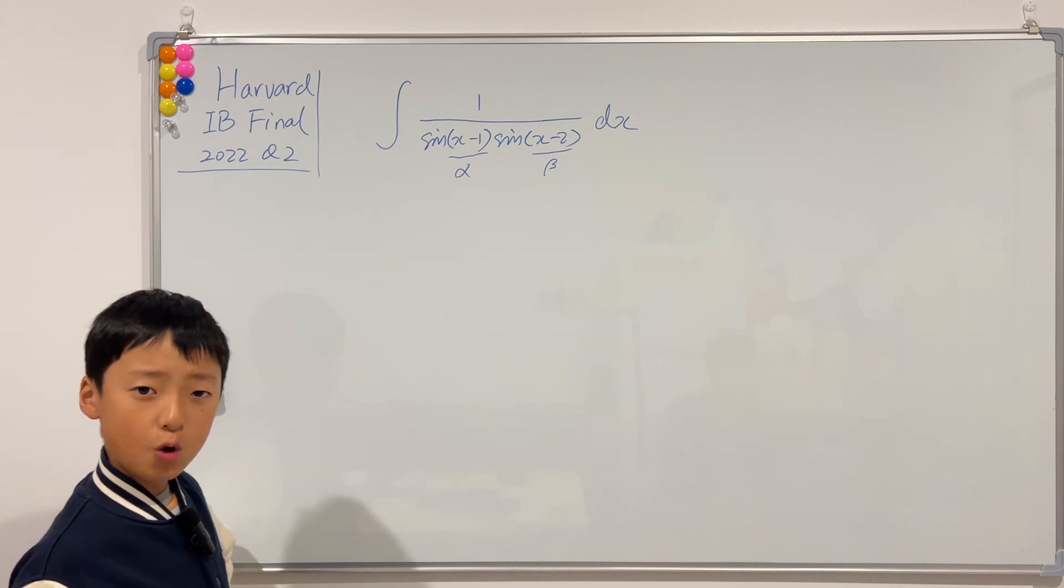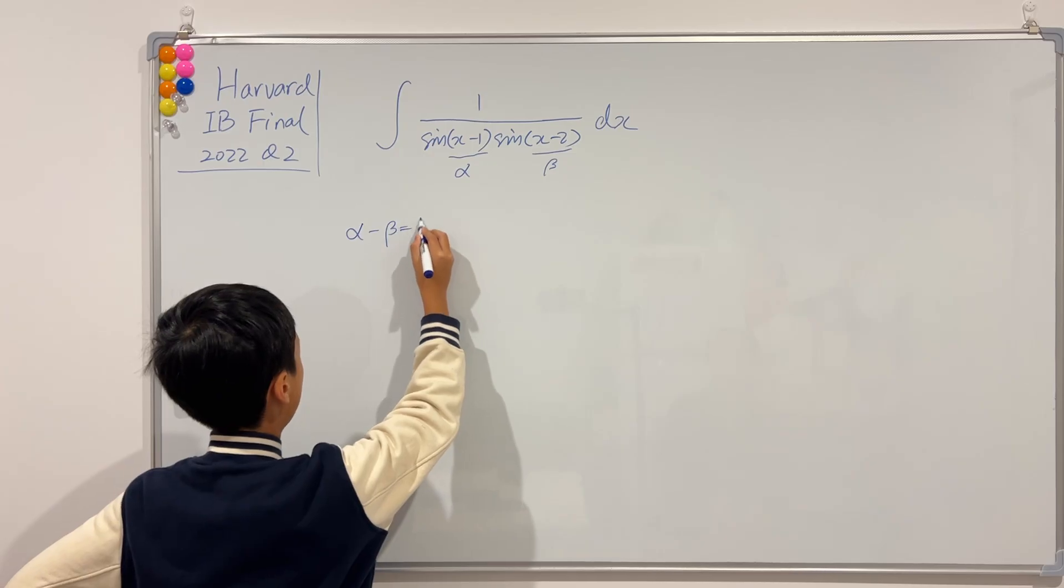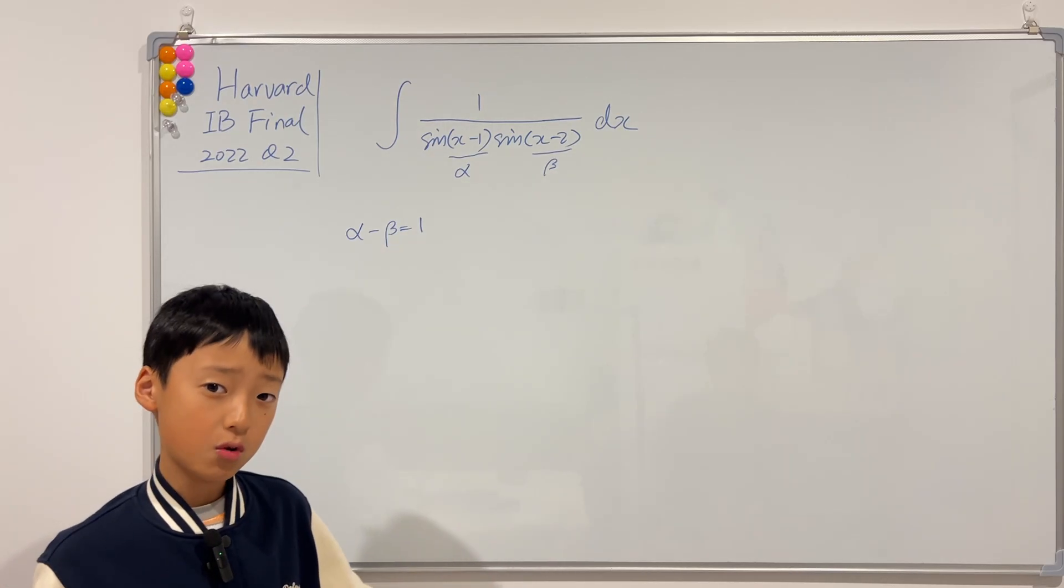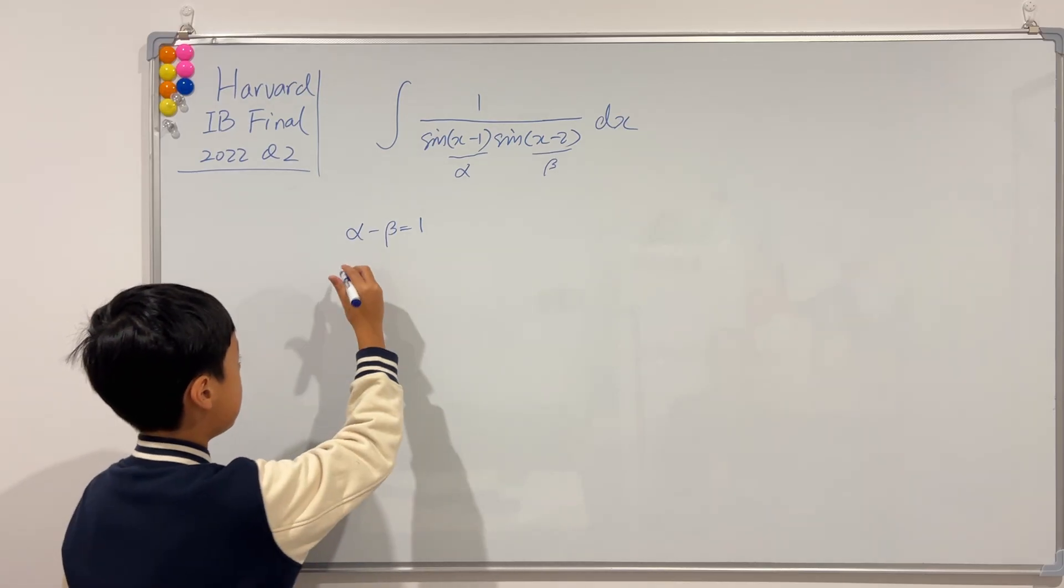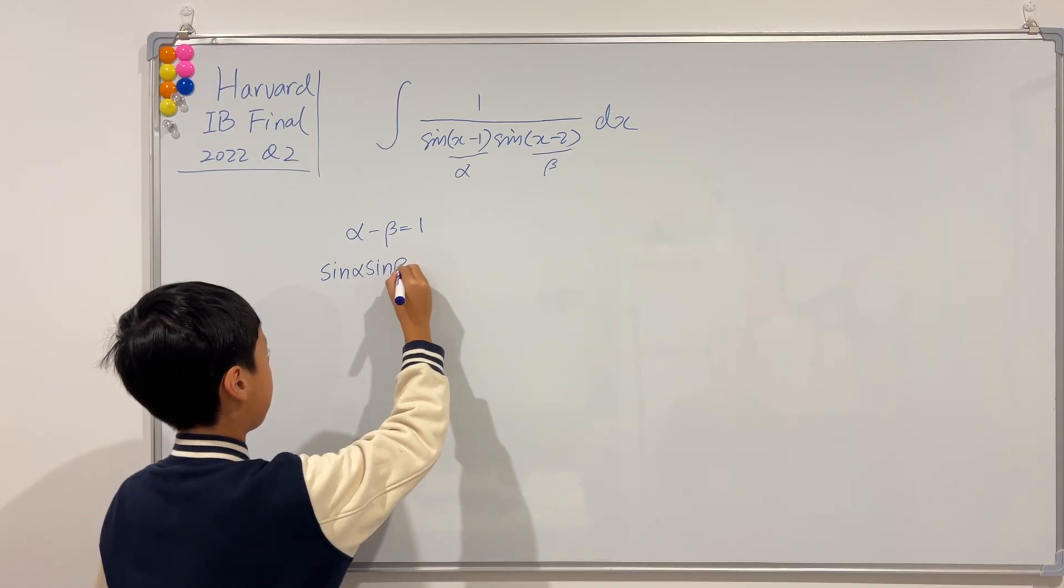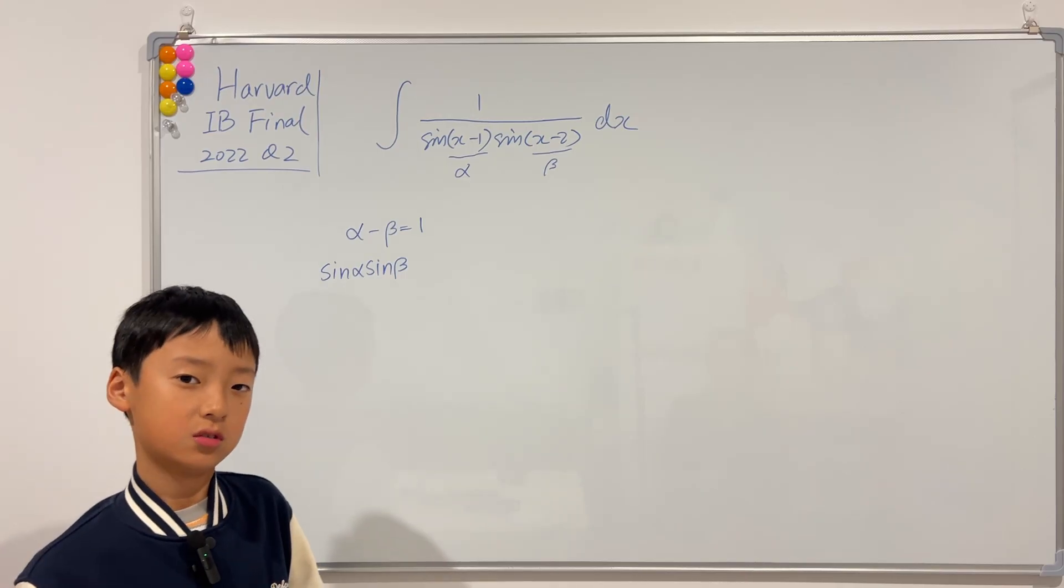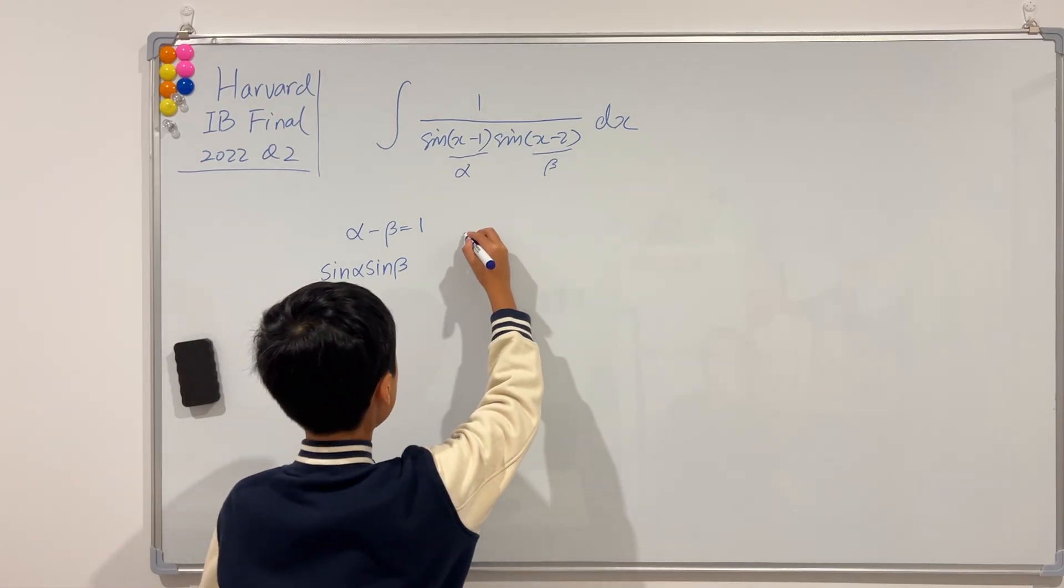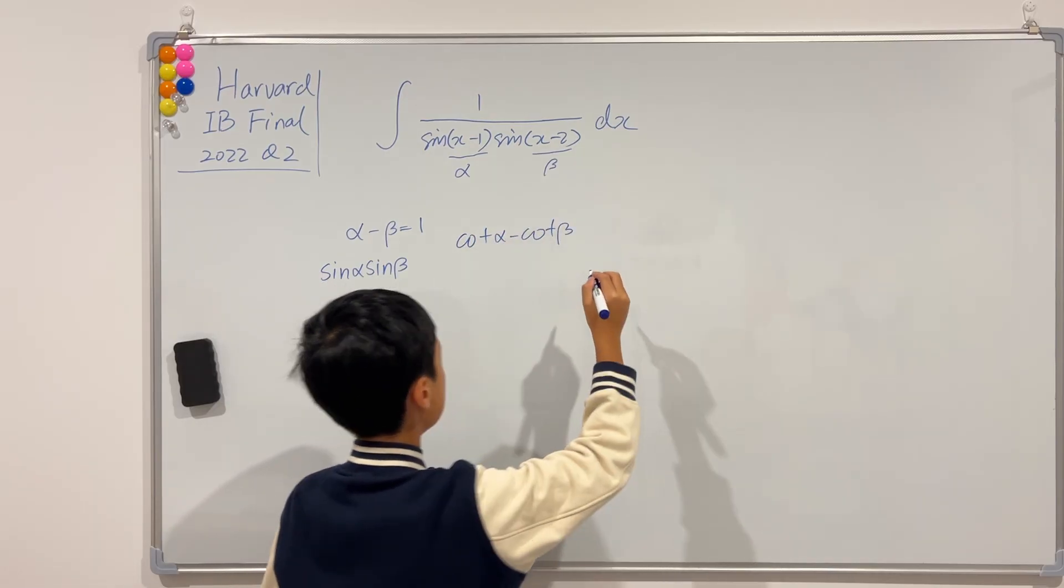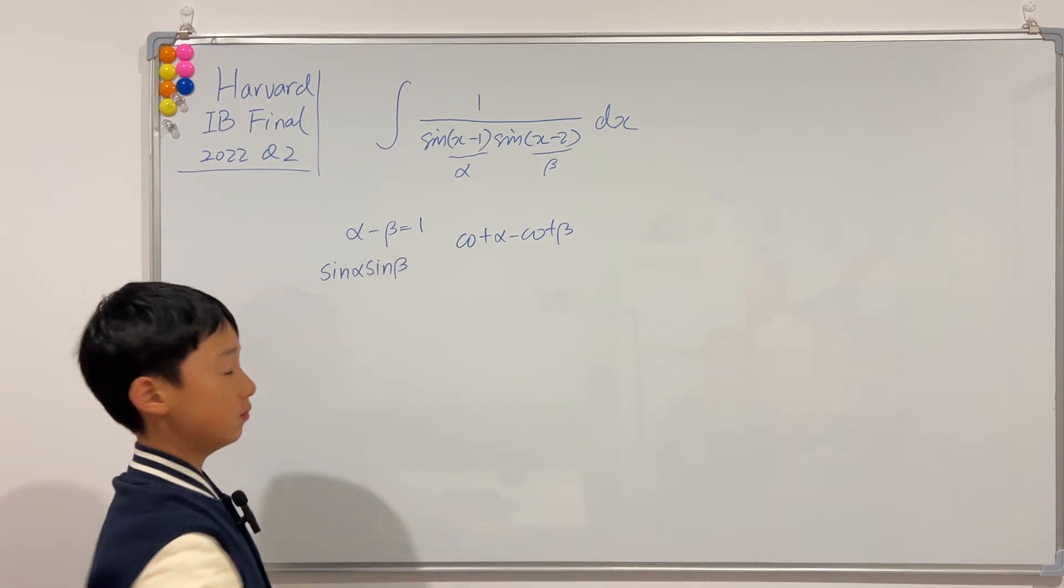So, if you notice, you'll notice that alpha minus beta is just 1. And if you recall in that video, we were trying to connect alpha minus beta and sine alpha times sine beta. But how? We used cotangent, or more specifically, cotangent of alpha minus cotangent of beta. And this can very easily just connect these two.